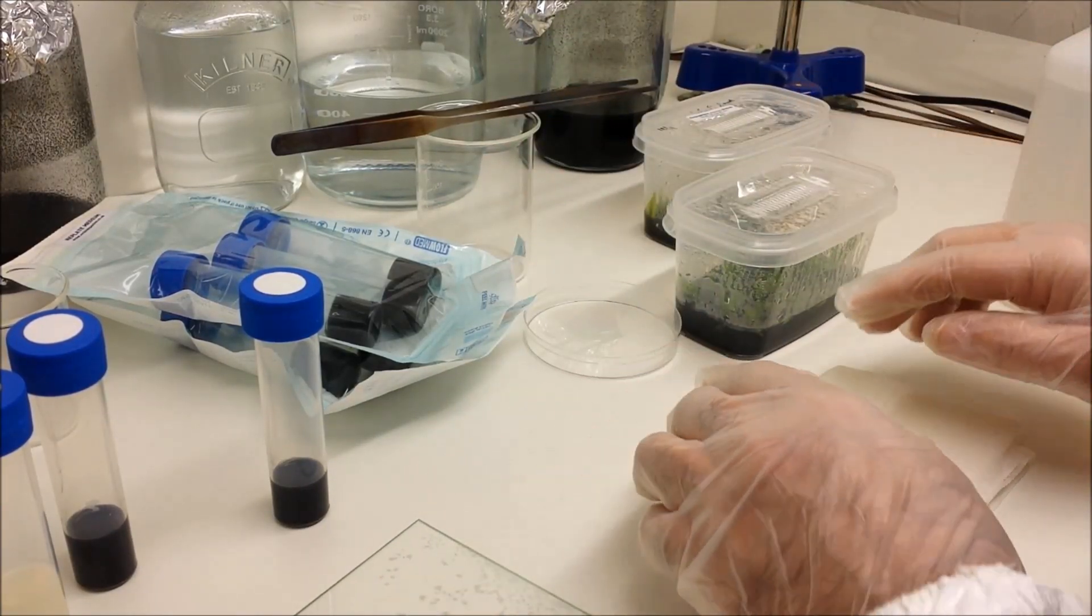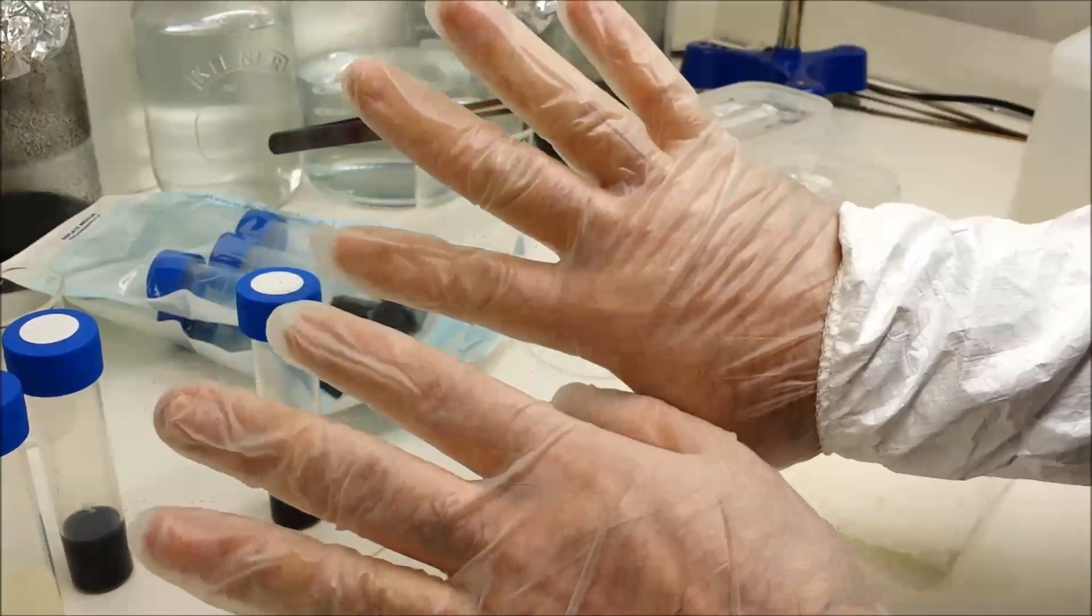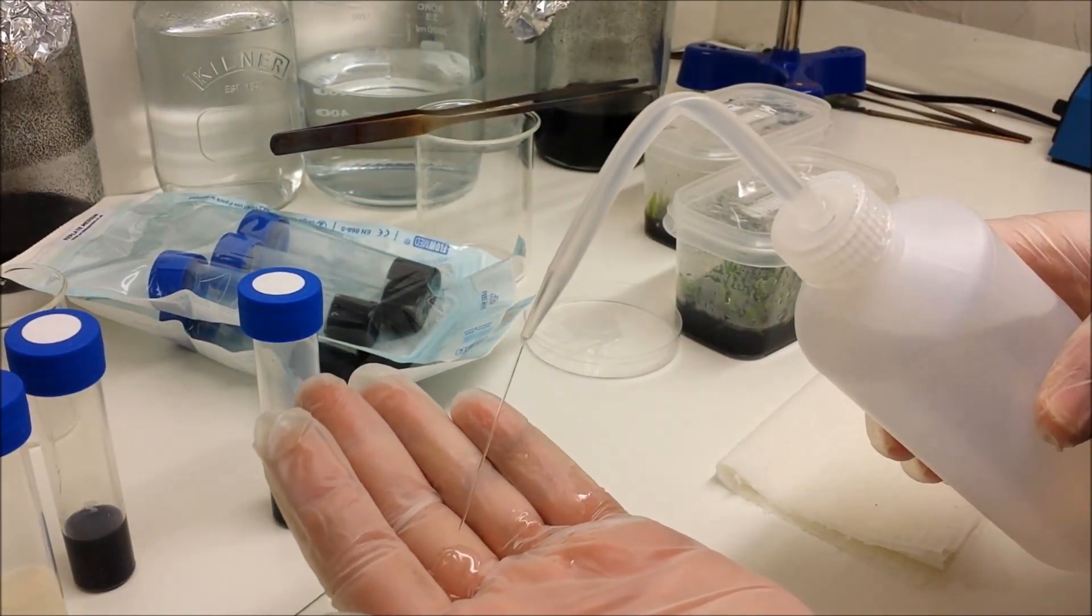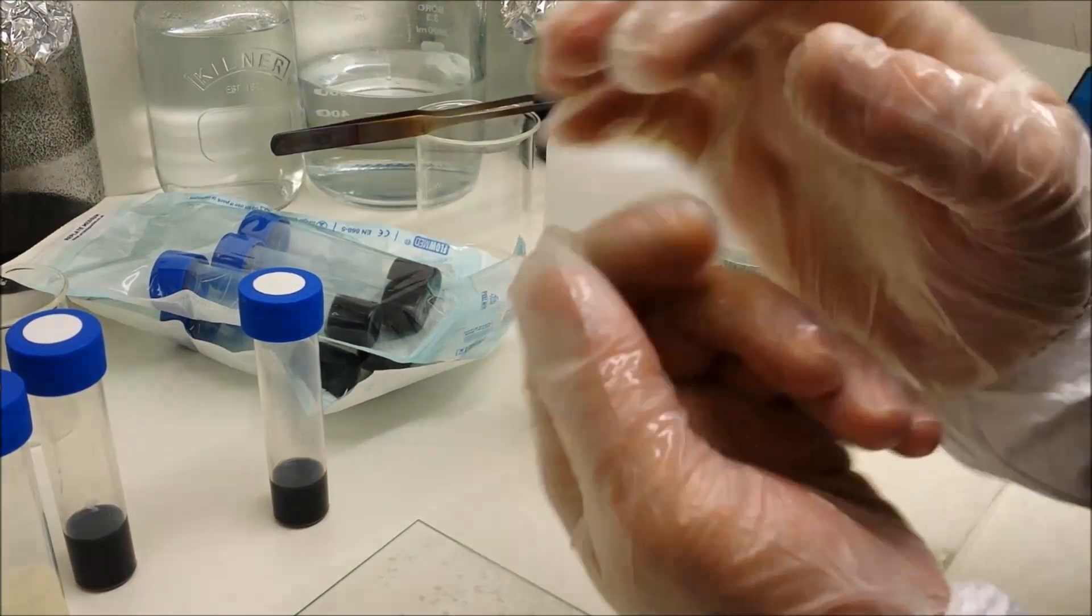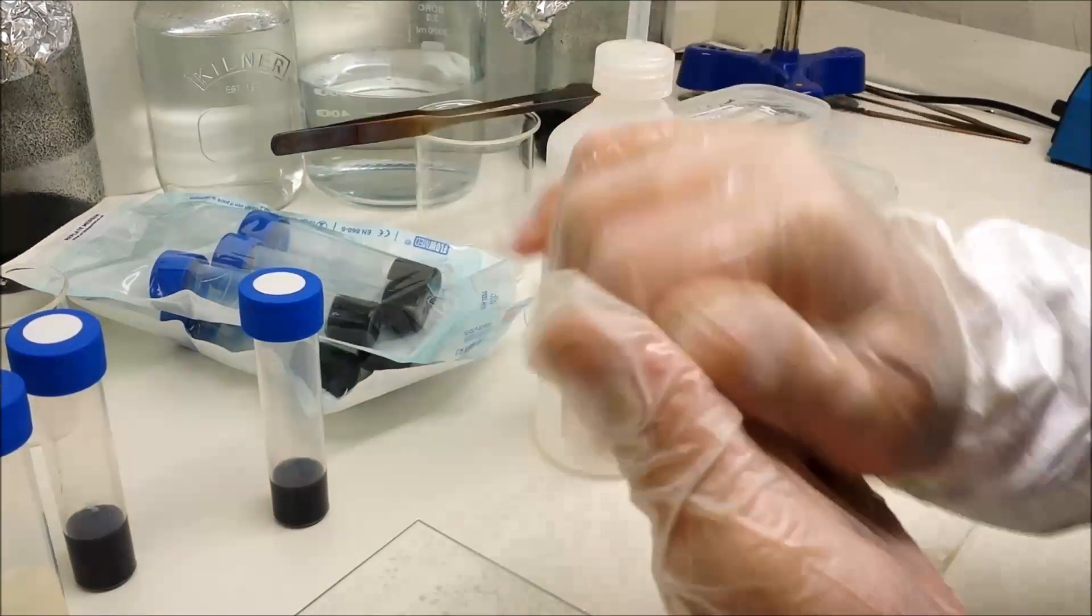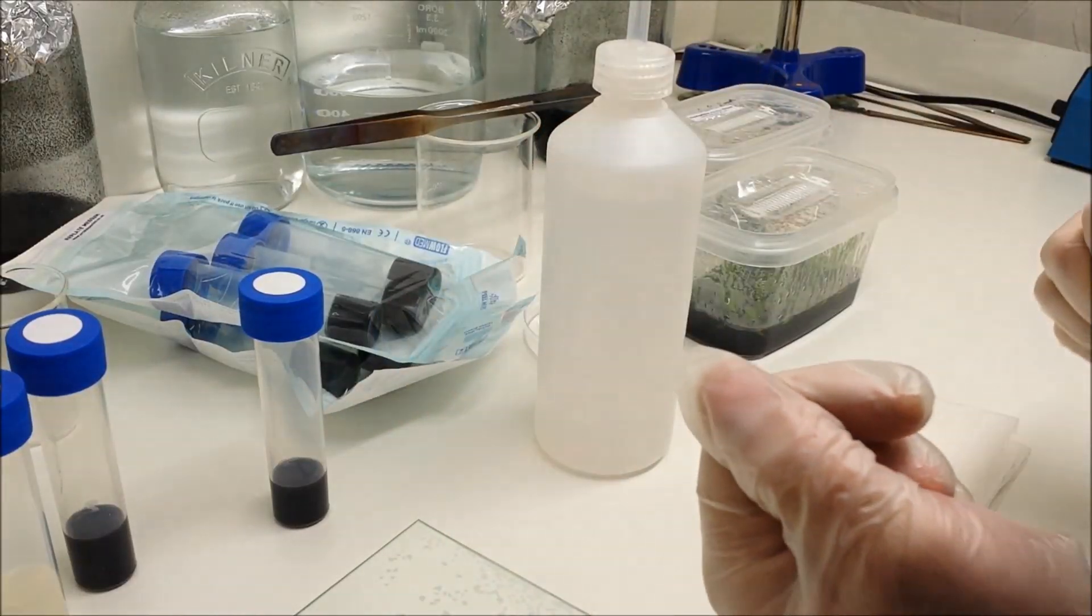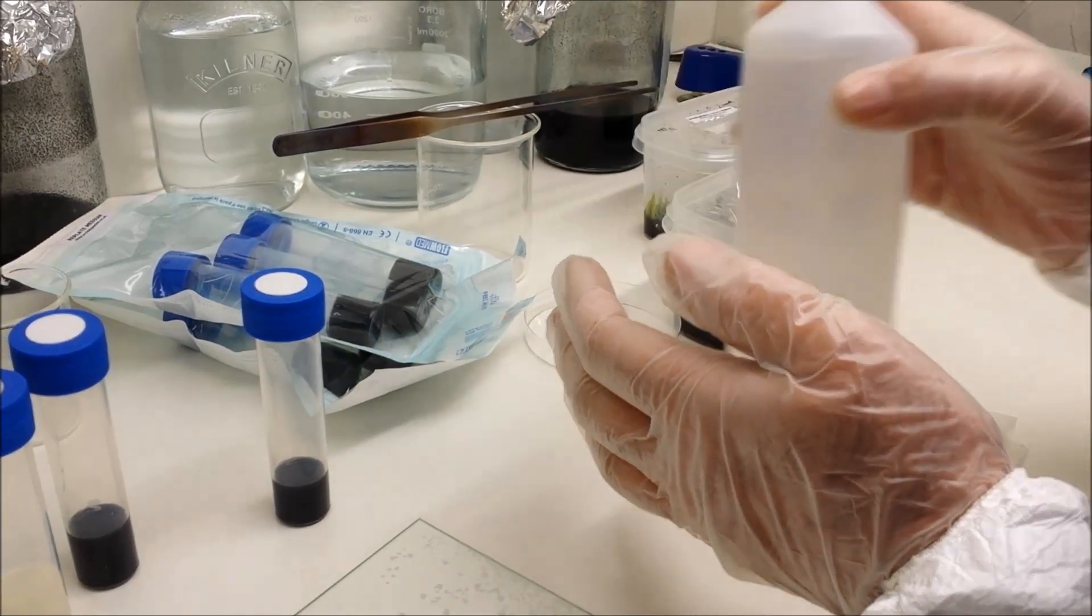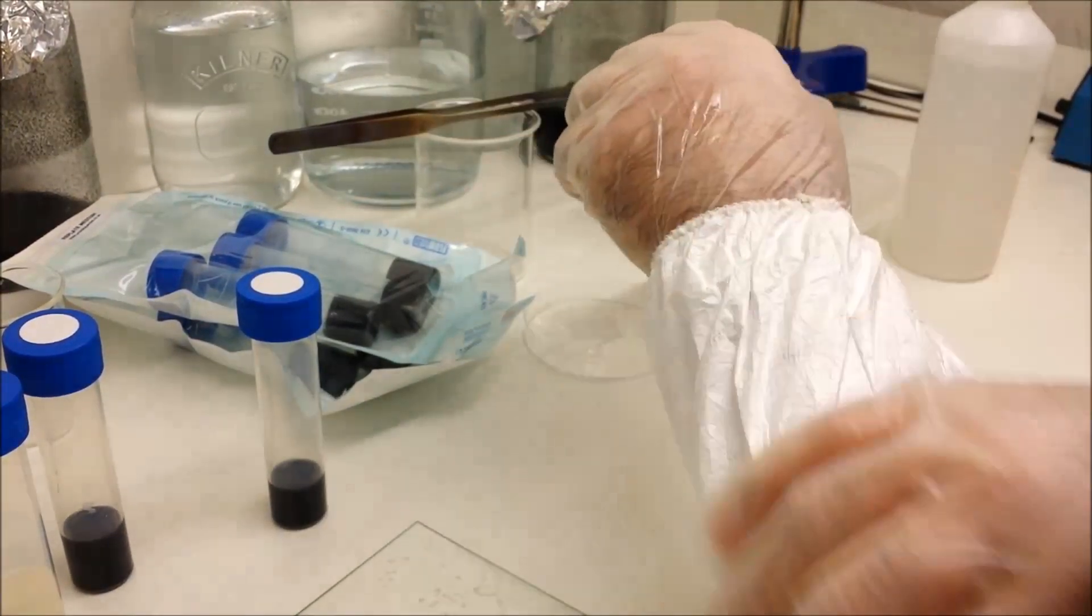Now the first thing to note is that I've sterilized the entire surface that you can see in the background, as well as my gloves, surgical gloves. I'm applying IPA, which is isopropyl alcohol, giving it a good rub to sterilize my hands. It's the most important thing that you can learn from this video—any germs whatsoever will contaminate your agar.